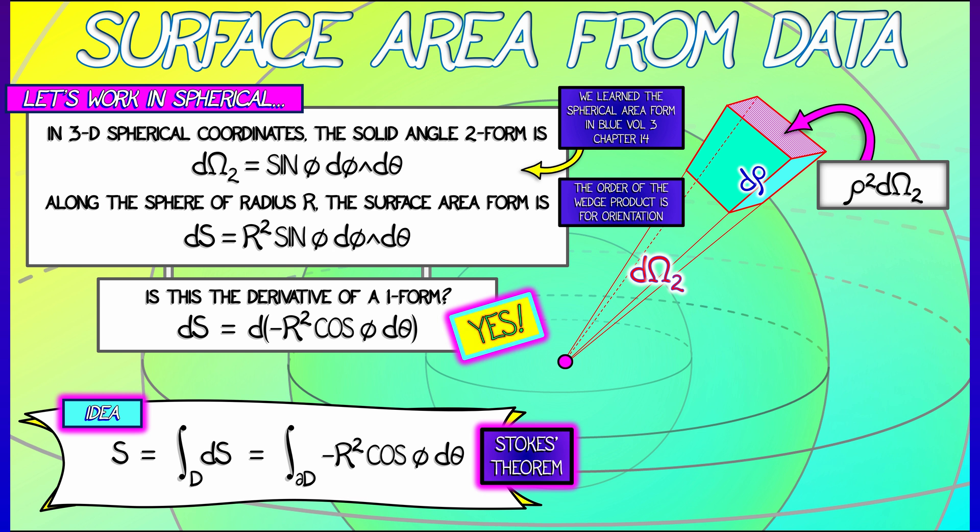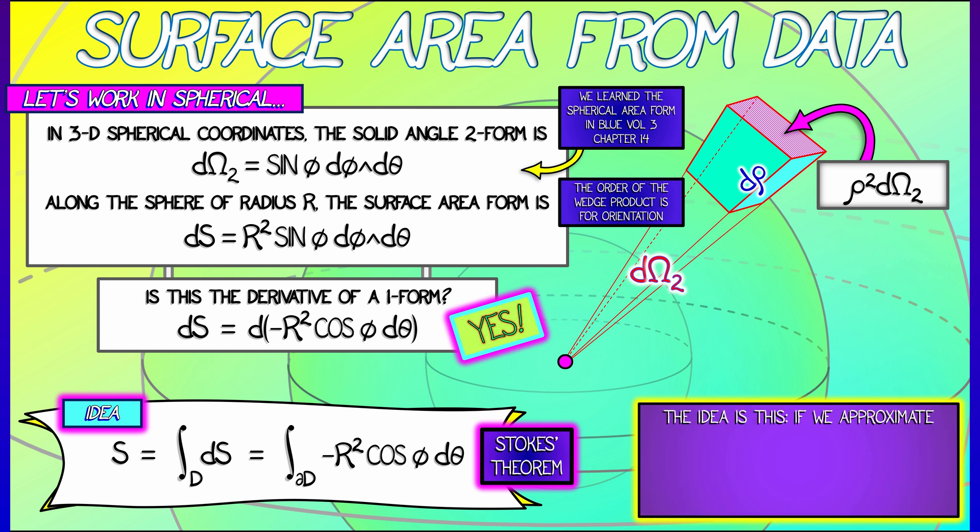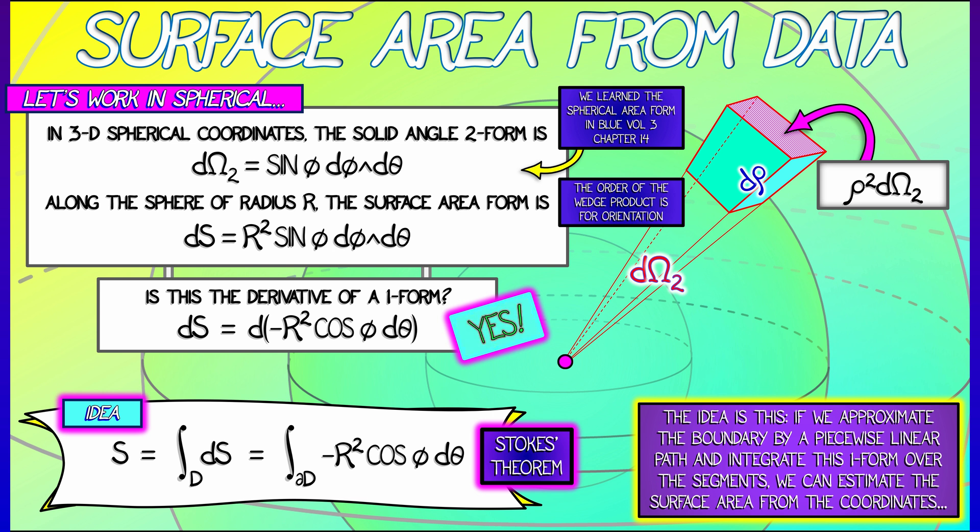And if that boundary is given by a sequence of points sampled along the boundary with an interpolated path, then we can integrate this one-form over each of those path segments, just like we did when we were estimating area in the plane. But this time, we're going to get surface area on the sphere.